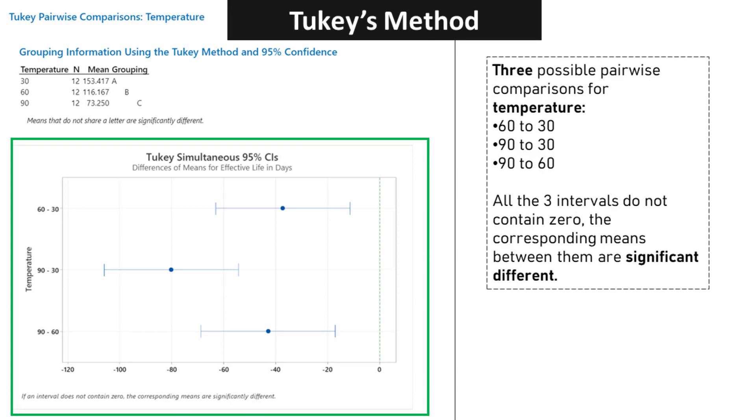Three possible pairwise comparisons for Temperature: 60 to 30, 90 to 30 and 90 to 60. All three intervals do not contain zero, so the corresponding means between them are significantly different.